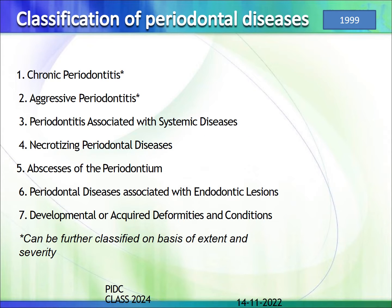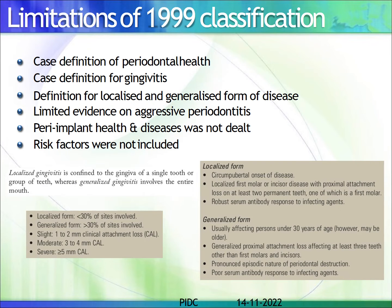In the 1999 classification, there were a set of seven periodontal diseases. But there were certain limitations — they couldn't give a proper case definition for periodontal health or gingivitis. The definition for localized and generalized forms of disease was not defined. There was limitation on the evidence for a term called aggressive periodontitis. Peri-implant health and diseases were not dealt with, and risk factors were not included as a major criteria for classifying the disease.